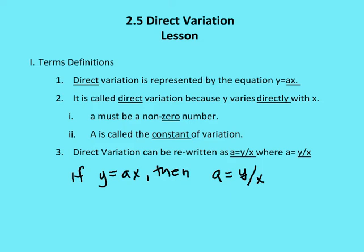There are some requirements for direct variation. If I say y is equal to ax, this value a is called the constant of variation, and that constant of variation needs to be a non-zero number. So y is equal to 3x would be an example of direct variation.